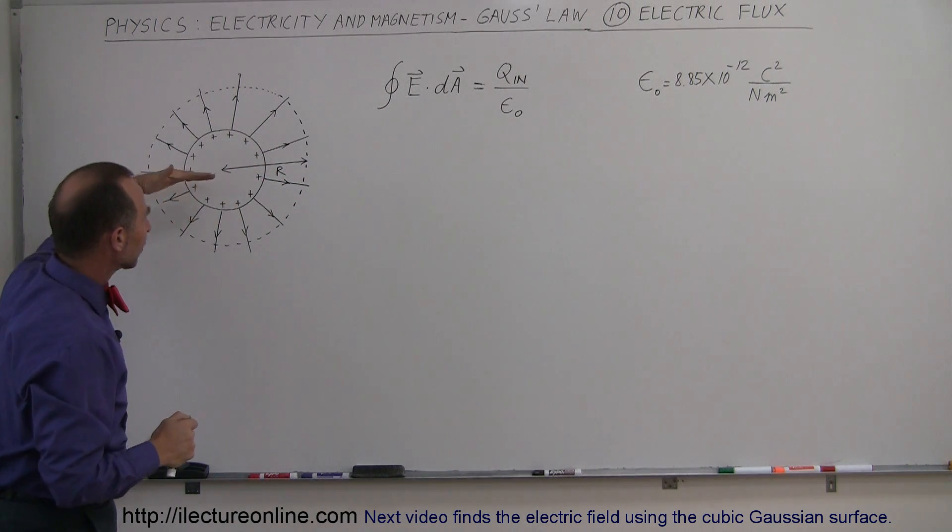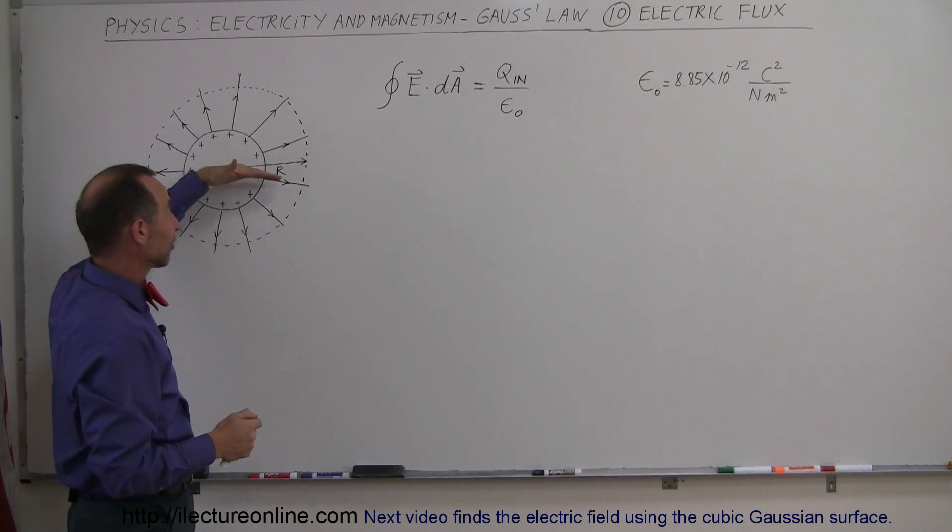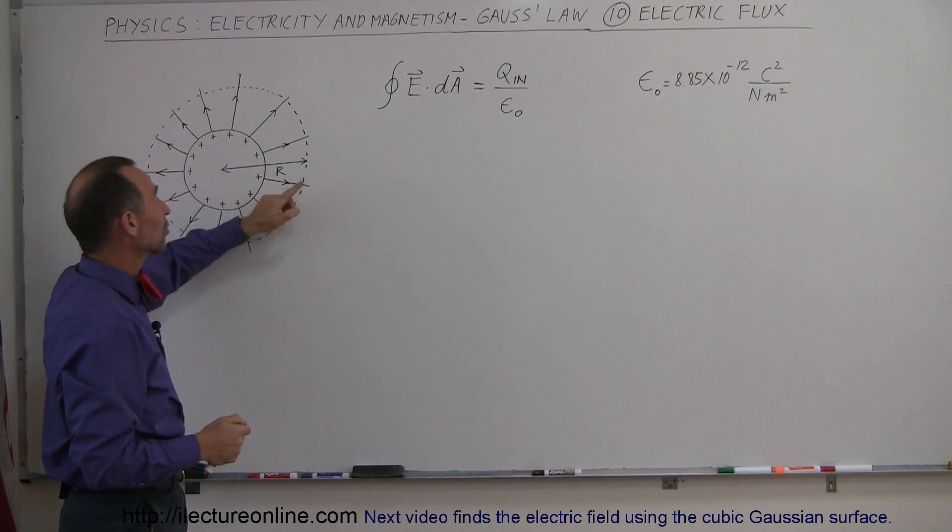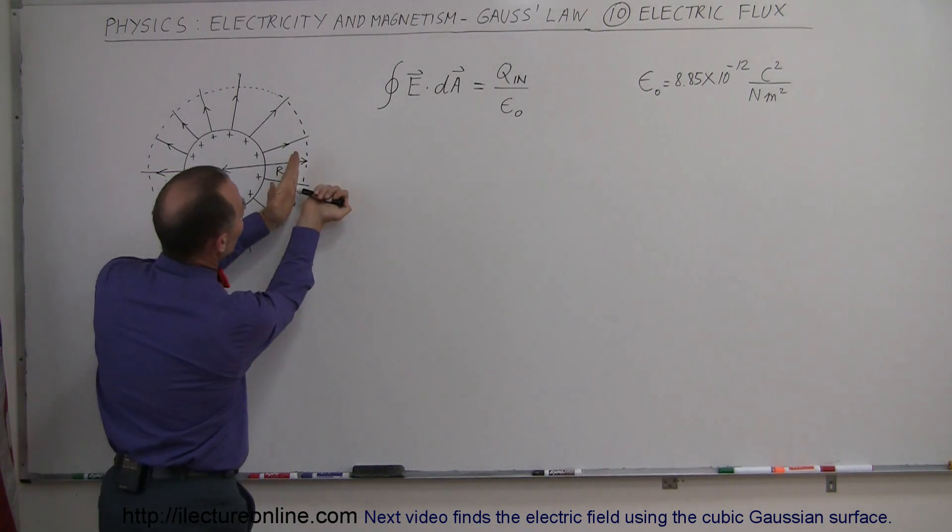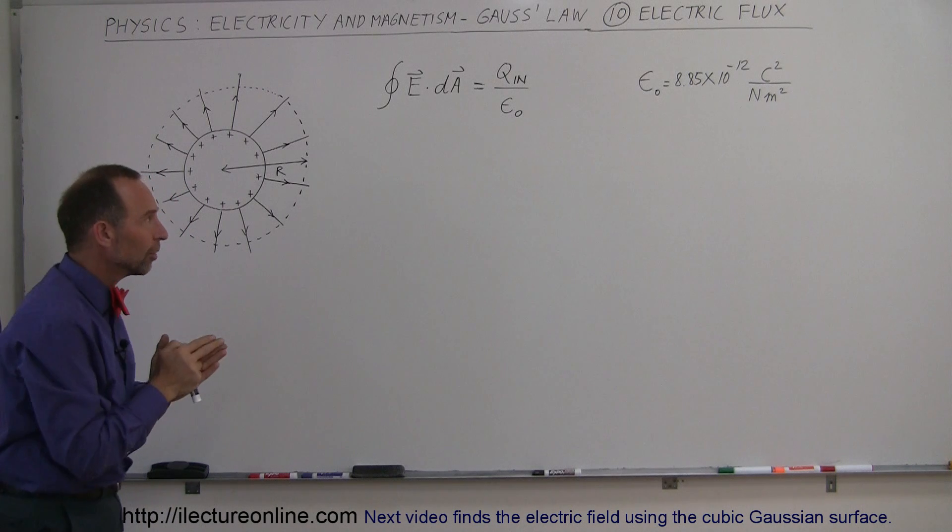Since the electric field direction is in the same direction as the perpendicular line away from the surface, the angle between those two vectors, E and dA, are zero.